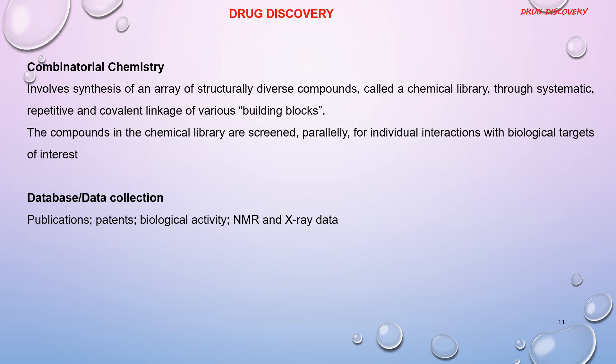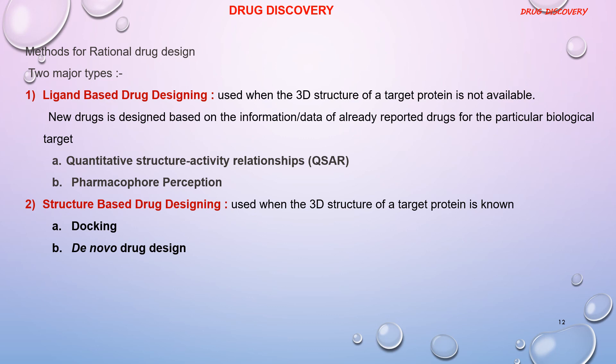The compounds identified are screened in parallel for individual interactions with biological targets of interest. Database and data collection involves study of the NMR and X-ray data of the molecule, publications, research work, patents, and works on biological activity. The rational method of designing involves two major types: ligand-based drug designing and structure-based drug designing, which will be studied in detail later.